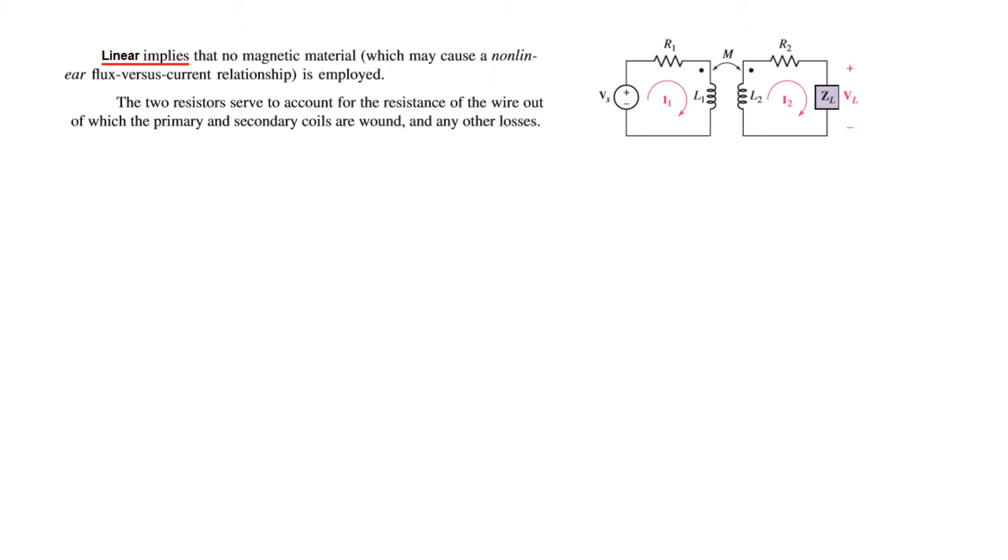Linear implies that no magnetic material which causes a nonlinear flux versus current relationship is employed. These two coils have their internal resistances, so to account for those, they have been represented by two external resistances R1 and R2.